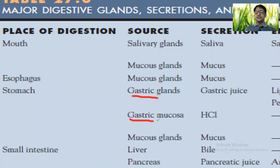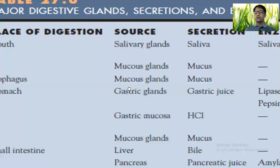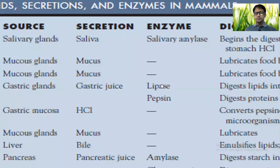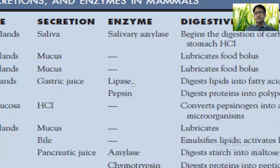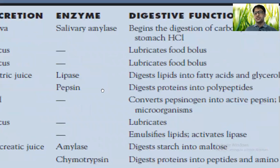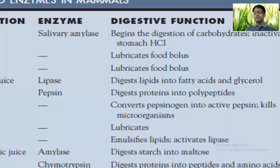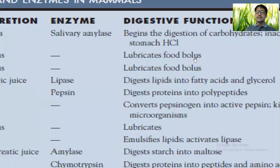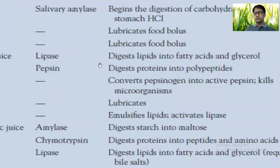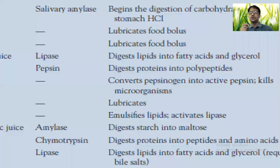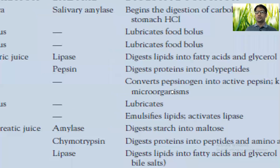The stomach has gastric glands which produce gastric juice as well as HCl. HCl is responsible for maintaining acidic pH, while gastric juice mainly contains pepsin, which digests proteins into polypeptides, and lipase, which digests lipids into fatty acids and glycerol. HCl converts pepsinogen into active pepsin and also acts as an antiseptic, as microbes cannot survive at such low pH.